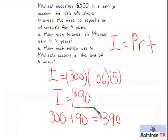The amount of interest is $90, which is A, and the balance in the account, which is $390, which is B. Thank you for watching Billy's description of interest.